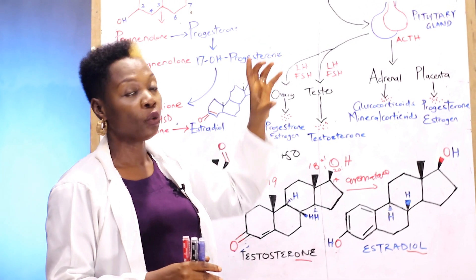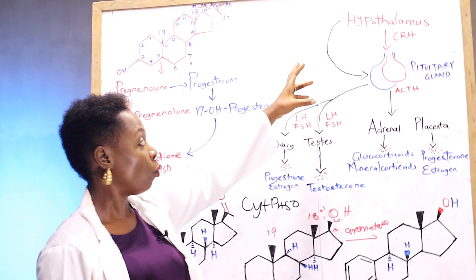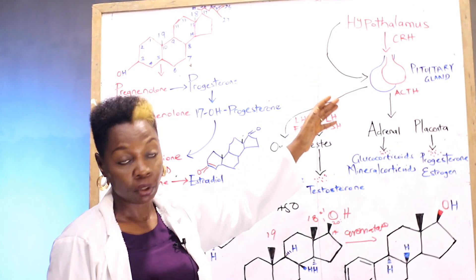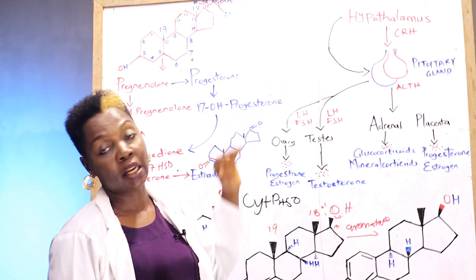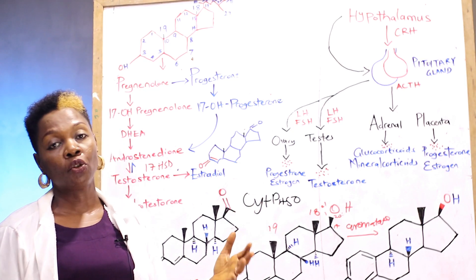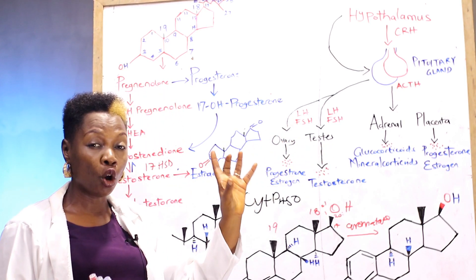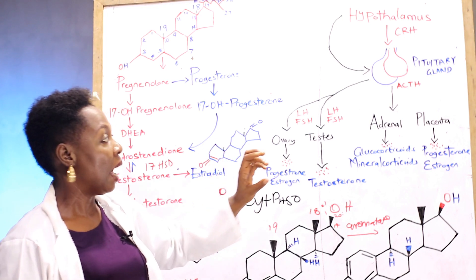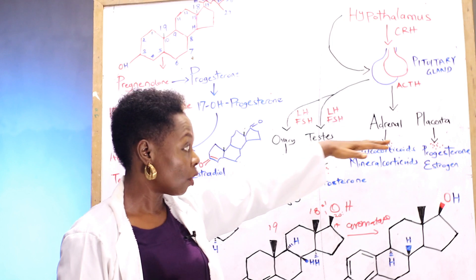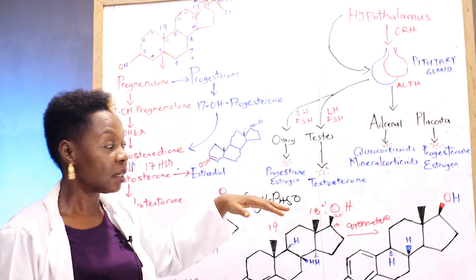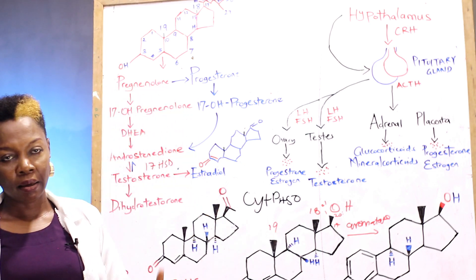By way of recap, the relationship between the nervous system and the endocrine system is between the hypothalamus and the pituitary gland, which is also known as the master gland. The hypothalamus sends releasing factors to the pituitary gland, which is situated below the hypothalamus and controls the activity of other endocrine glands — that is why it is called the master gland.